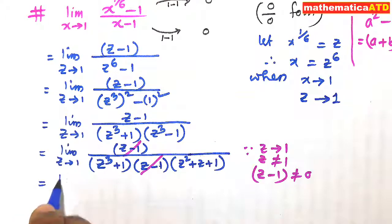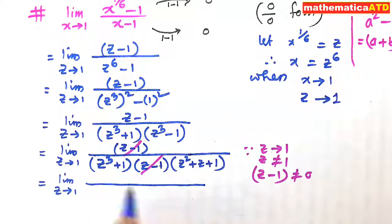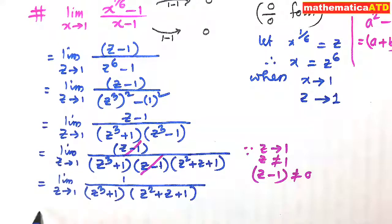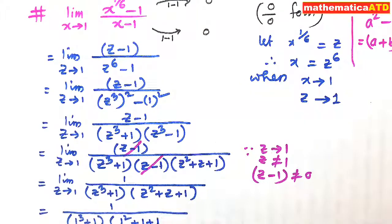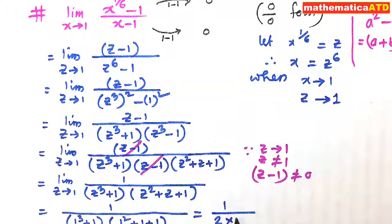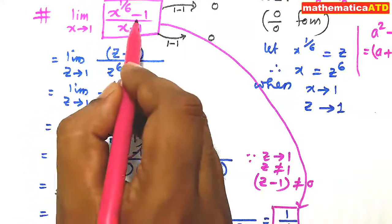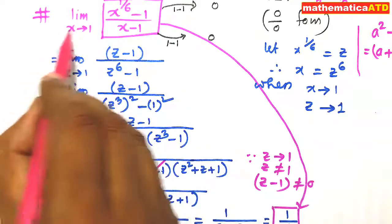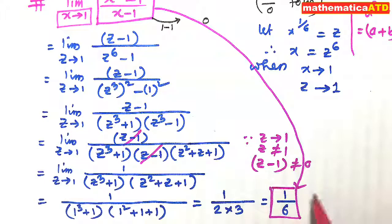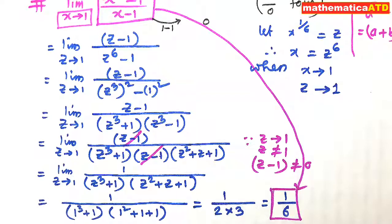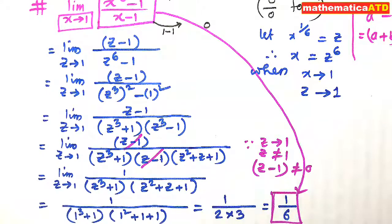So limit z tends to 1 of 1 upon z cube plus 1 whole into z square plus z plus 1. For the limiting condition z tends to 1, the limit equals 1 upon 1 cube plus 1 whole into 1 square plus 1 plus 1, which is 1 upon 2 into 3, that is equal to 1 by 6. For the function x to the power 1 sixth minus 1 divided by x minus 1, when limit x tends to 1, the limiting value is 1 upon 6. In this way, you can find and solve many more examples using the substitution method.